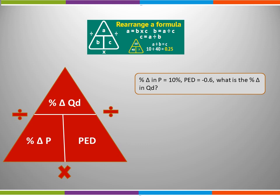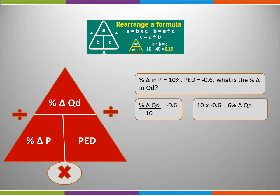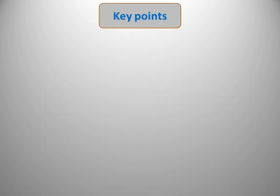Here's a second example. This time, we're told the percentage change in price — the bottom left of our triangle — and we're told the PED, the bottom right of our triangle. This time, we've been asked to calculate the percentage change in quantity demanded. Why not pause the video whilst you calculate the percentage change in QD? We first put the information we know into our formula: the unknown percentage change in QD divided by 10 equals minus 0.6. Looking at our diagram to the left, we can see that we must therefore multiply these two figures together, so the percentage change in quantity demanded was 6%.